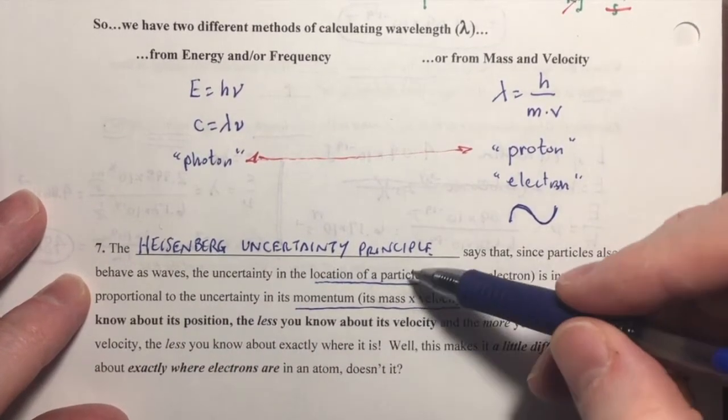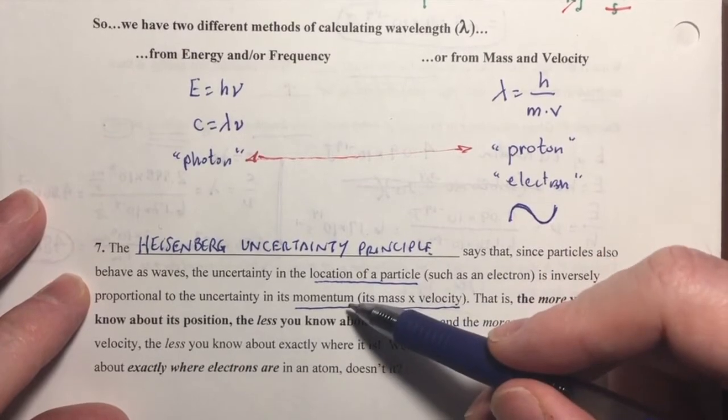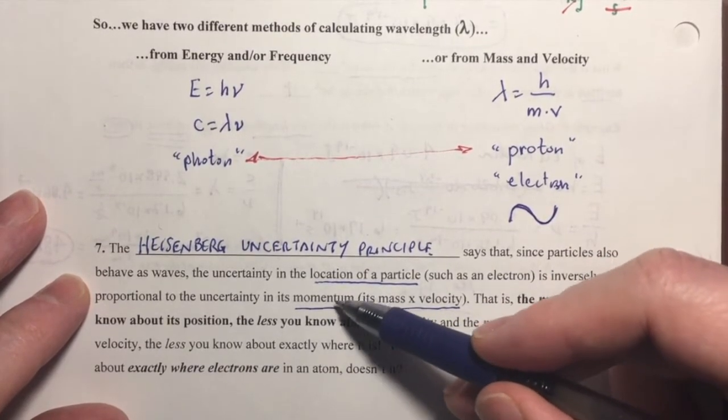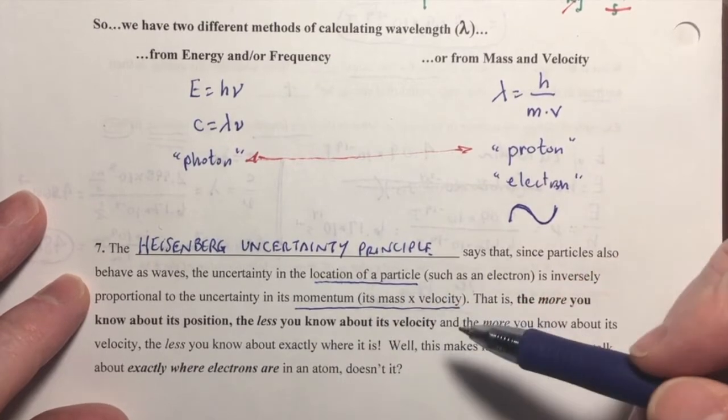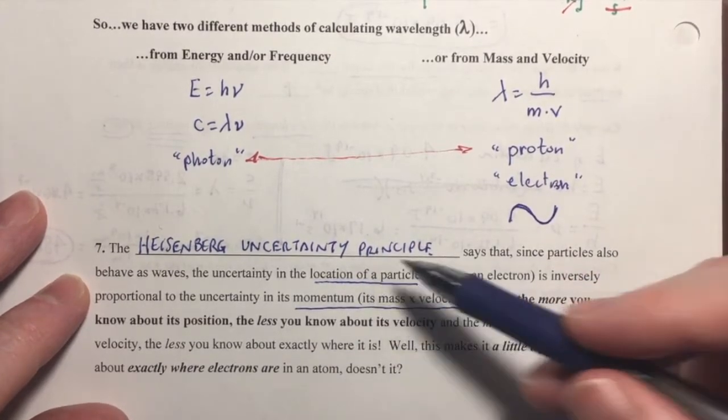And the Heisenberg uncertainty principle says that since particles also behave as waves, the uncertainty in the location of a particle, such as an electron, is inversely proportional to the uncertainty of its momentum. So, the more that you know one, the less you know of the other. And the more that you know about the other, the less that you know about the first one, its location.